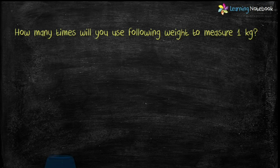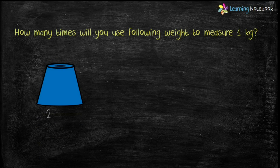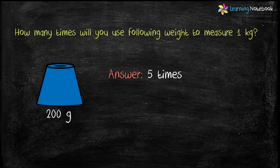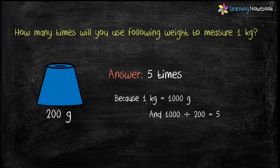The last weight given is 200 g. Dividing 1000 by 200 gives 5, so we will use this weight 5 times to measure 1 kilogram.